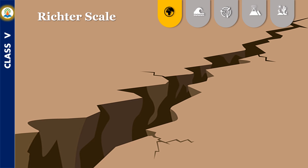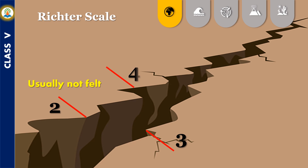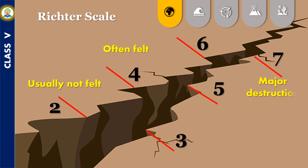The intensity of an earthquake is measured using the Richter scale. An earthquake measuring three on the Richter scale is not even felt. An earthquake measuring four to five is felt as tremors, while an earthquake measuring seven and above has the capacity to destroy an entire city.